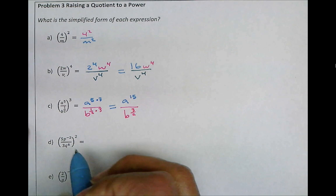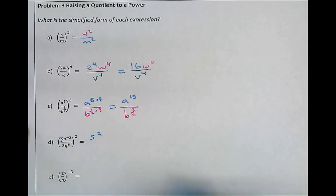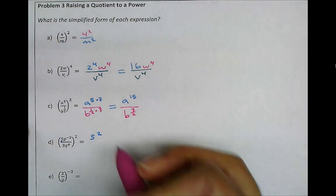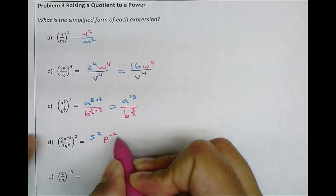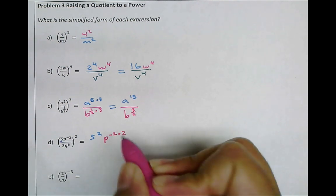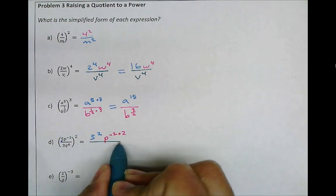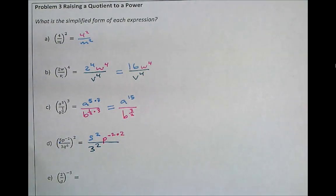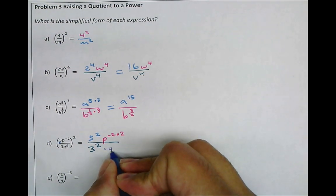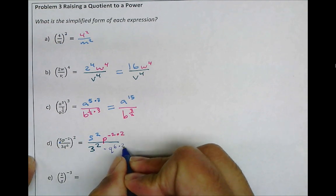Now, we have 5 raised to the power of 2. So again, looking at each piece separately, we next have this p to the power of negative 2 raised to the power of 2, which means those two get multiplied, over 3 raised to the power of 2. And lastly, we have this q to the power of 6 being raised to the power of 2, which means we're multiplying those exponents.